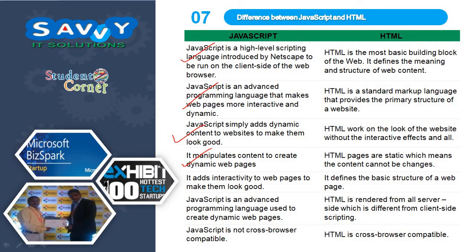HTML pages are static, which means the content cannot be changed. JavaScript adds interactivity to web pages and defines dynamic behavior. HTML defines the basic structure of a web page. JavaScript is an advanced programming language used to create dynamic web pages. HTML is rendered from all server-side scripts, which is different from client-side scripting. JavaScript is not cross-browser compatible, while HTML is cross-browser compatible. Thank you.